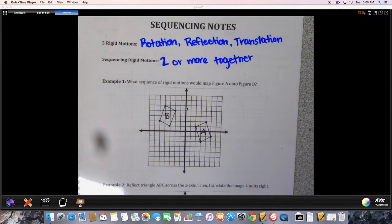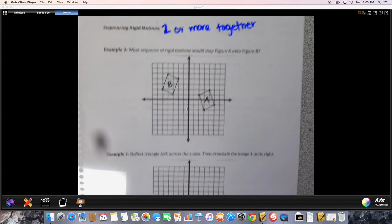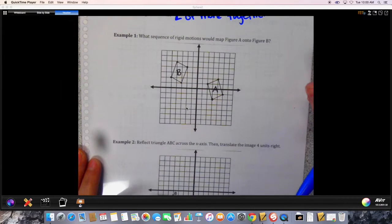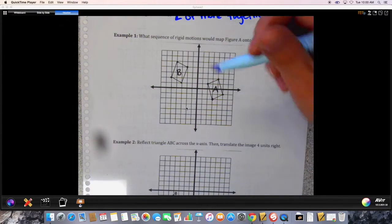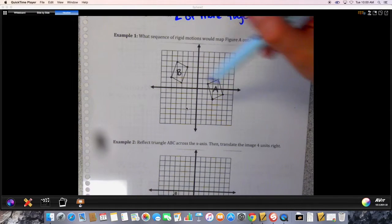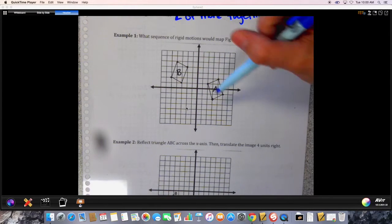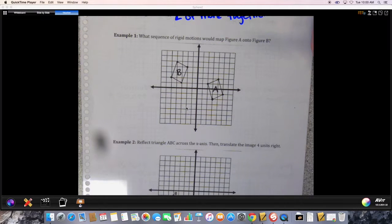Two things you have to do. The first one is you're going to have to identify the sequence. So on here you have two different shapes - well, they're the same shape - but you want to tell how you map one onto the other.